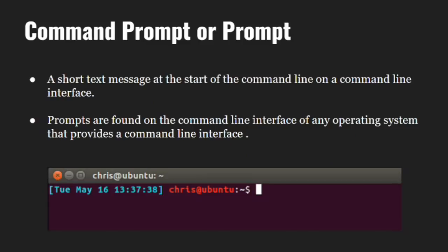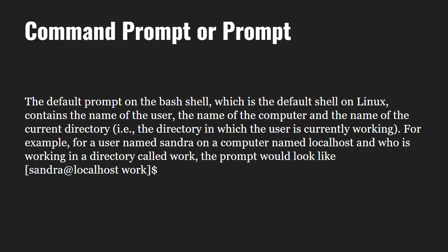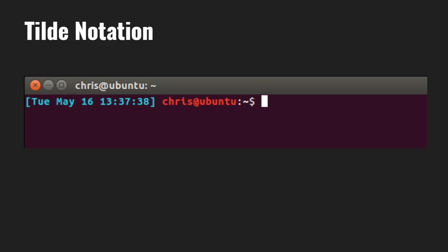Let us learn about the command prompt. When you start a shell, it will display a prompt or a short message. In this example, you can see the date, time, name of the user, and distribution. At the end of the prompt, you can see a dollar sign, which indicates that you are a normal account user. In contrast, if you see a hash sign, it indicates that you are a super user who has access to everything. Normal users can only do some of the things that the super user can do. The default prompt on the bash shell contains the name of the user, the name of the computer, and the name of the current directory. The tilde is a shortcut way of representing the home directory.